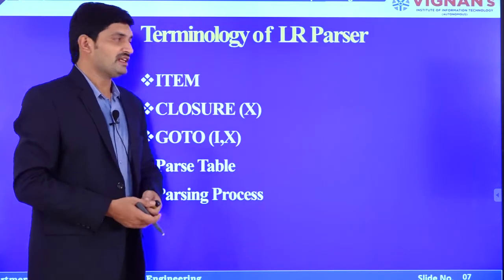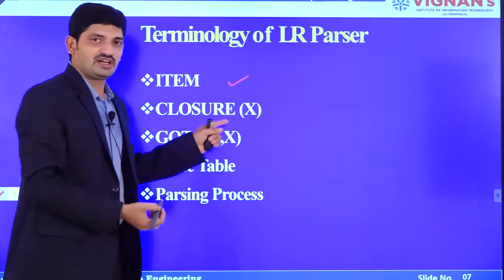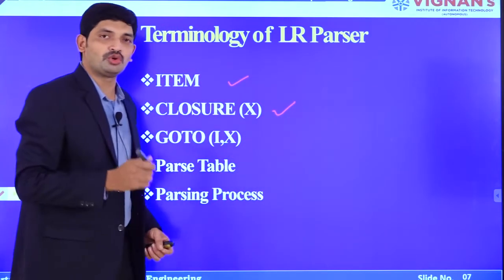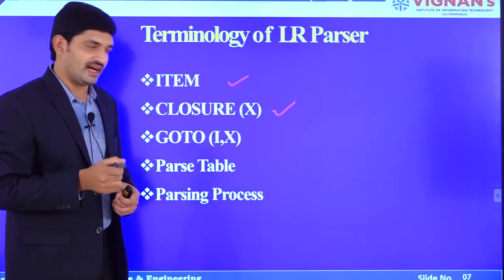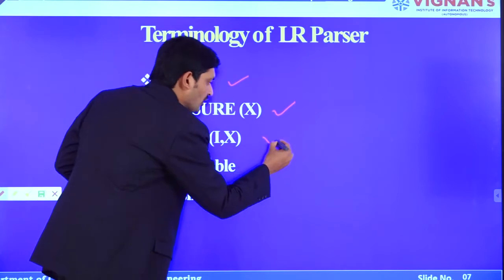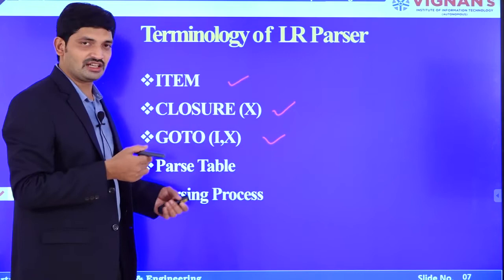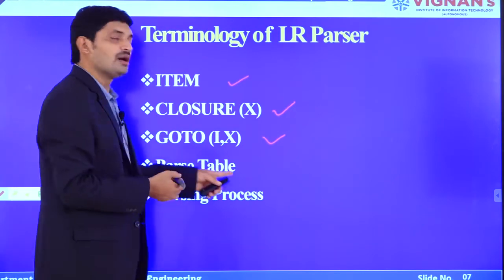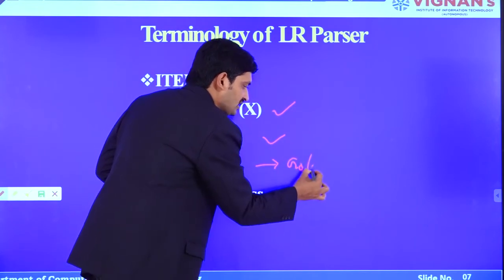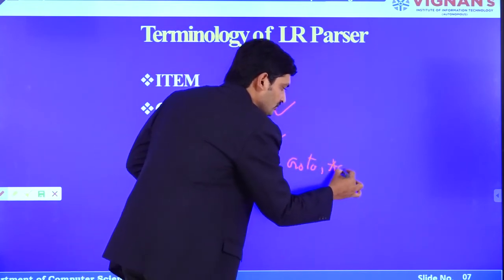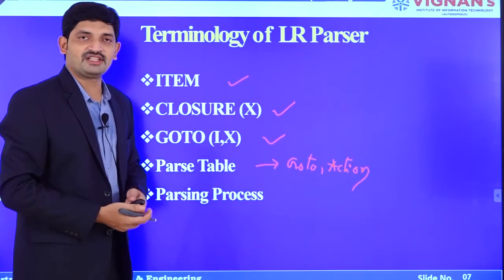The various terminology of LR parsers includes: first, the item; second, the closure operation used to construct LR0 or LR1 items; third, the goto operation also used to construct LR0 or LR1 items; then the parse table which consists of the goto and action parts; and finally, the parsing process.